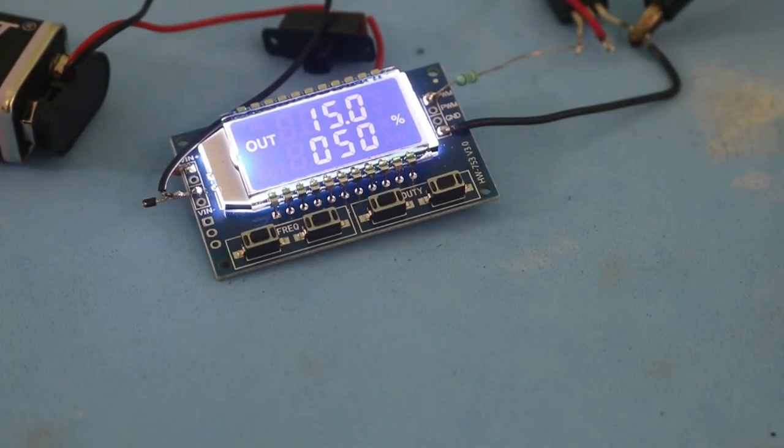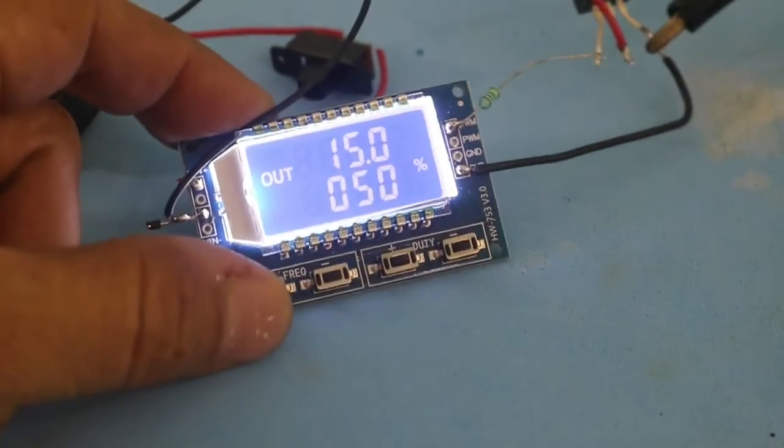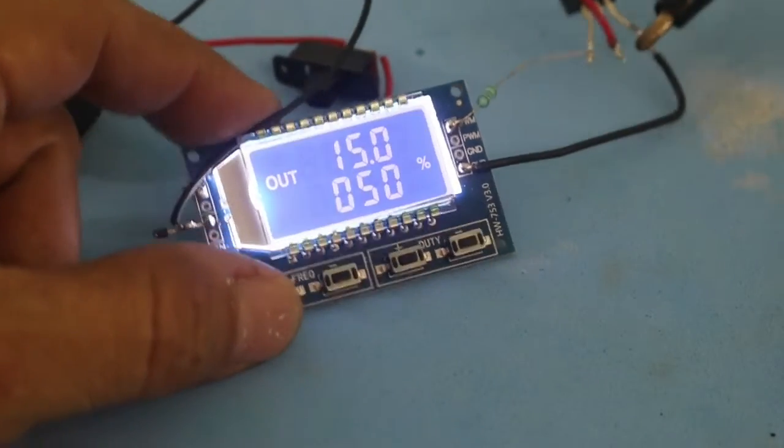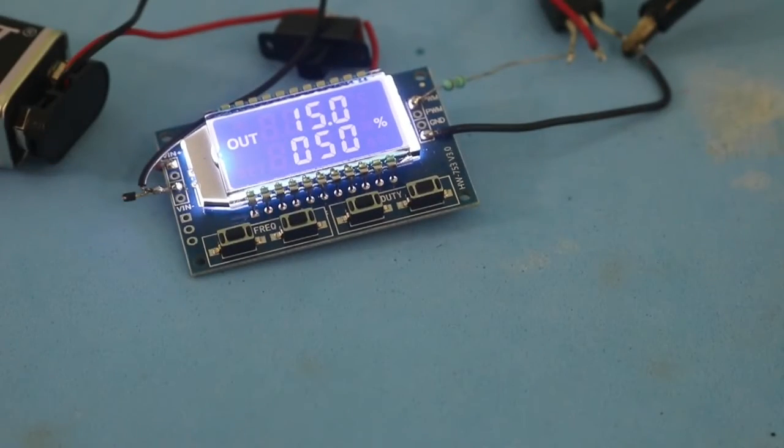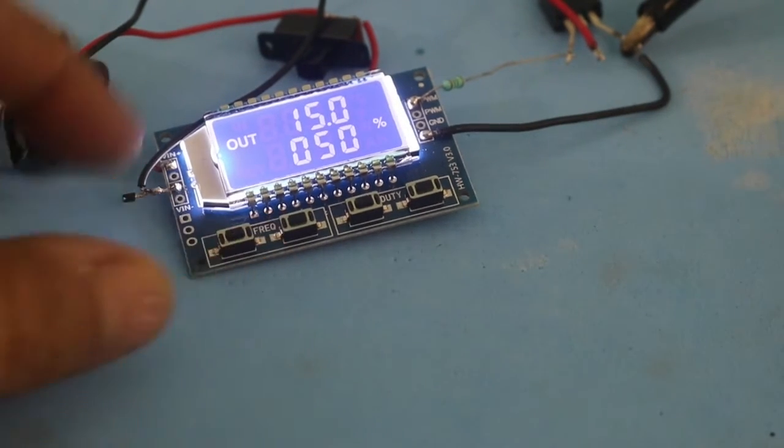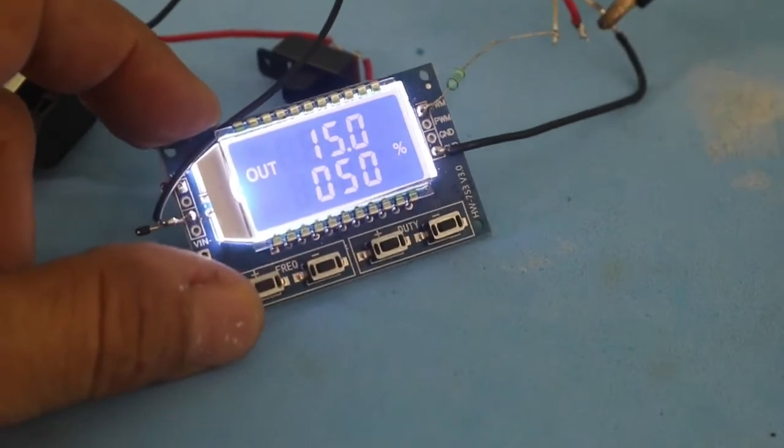Okay, nothing impressive. Let's now reduce the frequency to 15 kilohertz. Each flyback has its own frequency of work, and that is the advantage of using a module like this. You can select the frequency.